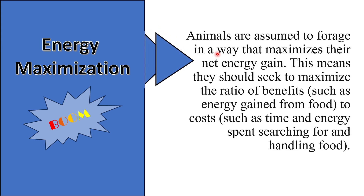Animals are assumed to forage in a way that maximizes their net energy gain, achieving the most optimal value. This means they should seek to maximize the ratio of benefits — such as energy gain from food — to costs, where costs refer to the time and energy spent to forage, capture, and process food. So E must be higher to have P higher.